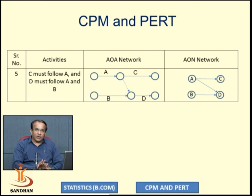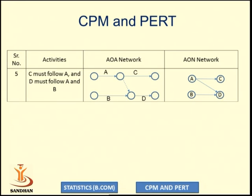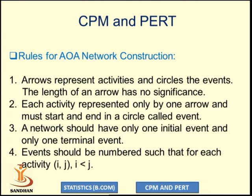In an AOA network diagram, the activities are represented on the arrow. Generally in network diagrams, we use the AOA network diagram. So in all examples, whatever we are taking for Critical Path Method and PERT technique, we will use the AOA network diagram.